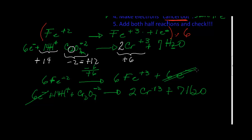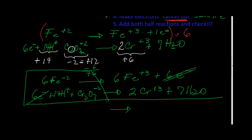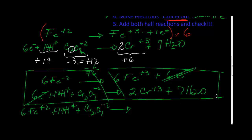My last step — after making the electrons cancel out — is to simply add both half-reactions. I made it to step five. I will rewrite the final equation. Before the arrow I have: six Fe²⁺, 14 H⁺ — this is an acidic medium, so we are adding some kind of acid to make this go — and my dichromate Cr₂O₇²⁻. On the product side I have six Fe³⁺, two chromiums Cr³⁺, and seven waters.